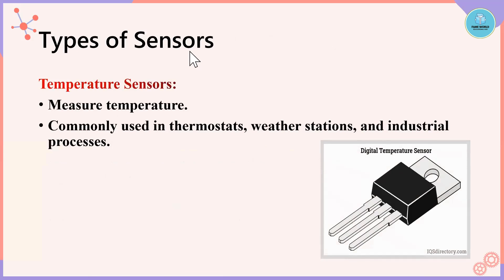The first sensor is the temperature sensor. As the name implies — and you can see the image of a digital temperature sensor — it measures temperature and is commonly used in thermostats, weather stations, and industrial processes. Types include thermocouples, RTDs (resistance temperature detectors), thermistors, and infrared sensors.